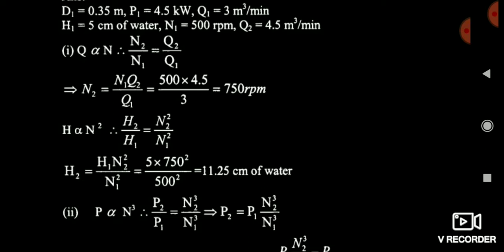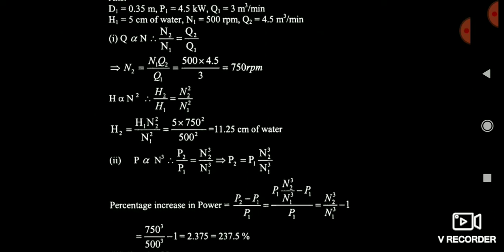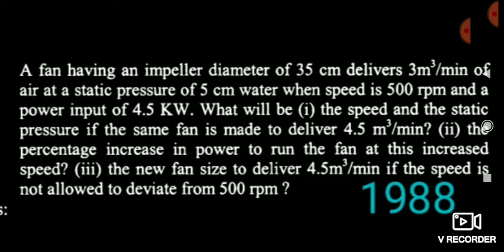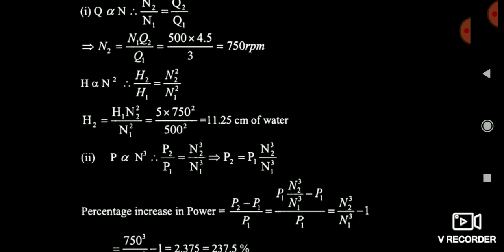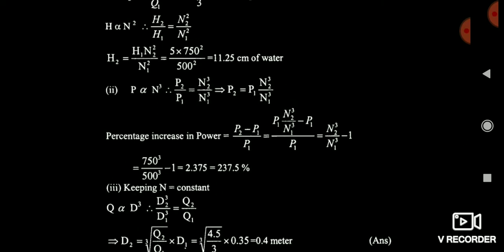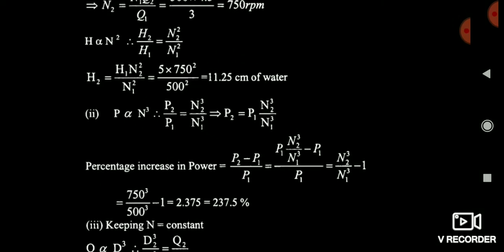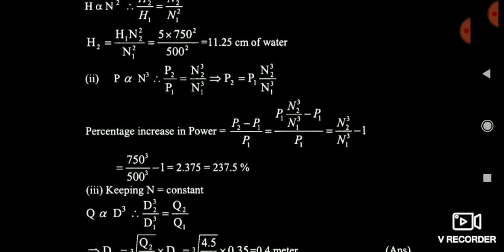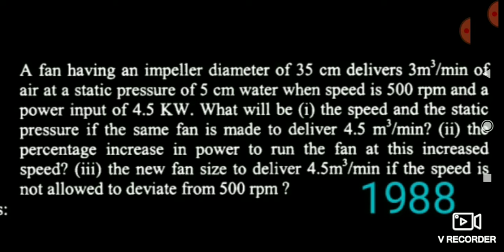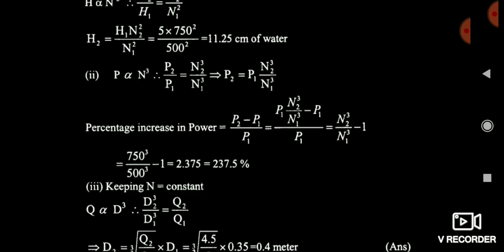After that, since head is proportional to the square of speed, using H2/H1 = N2²/N1² we get H2 = 11.25 cm of water. For the second part, it asks the percentage increase in power. Using P2/P1 = N2³/N1³ with P1 = 4.5 kW, and cancelling P1, we get the answer: 237.5 percent increase.